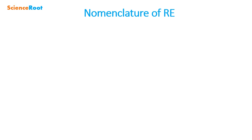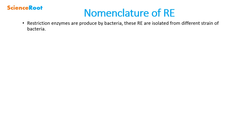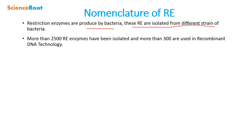Nomenclature of the Restriction Enzymes — let's see how they are named. Restriction enzymes are produced by bacteria. Bacteria possess the genes which code for restriction enzymes, and these restriction enzymes are isolated from different strains of bacteria. More than 2500 restriction enzymes have been isolated from different bacterial strains, and more than 300 are used in recombinant DNA technology.